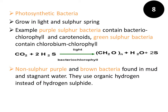There are certain special types of bacteria which contain chlorophyll and are capable of performing phototrophic nutrition. Such bacteria are known as photosynthetic bacteria, capable of growing in light and sulfur springs. Examples include purple sulfur bacteria, which contain bacteriochlorophyll and carotenoids. Note that the pigments in plants were chlorophyll A and B, which are absent here. Similarly, green sulfur bacteria contain chlorobium chlorophyll instead of chlorophyll A and B. In both cases, carbon dioxide combines with hydrogen sulfide in the presence of light and pigment to produce carbohydrate, and sulfur is liberated instead of oxygen.